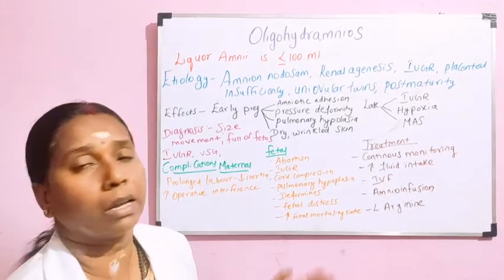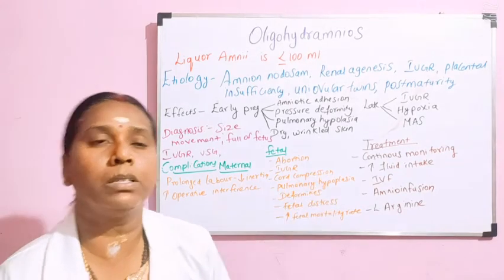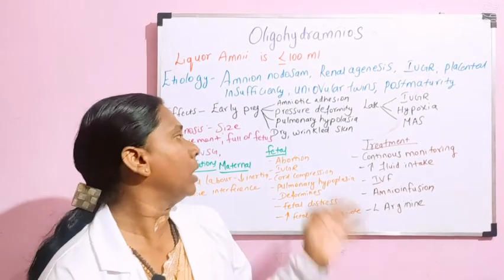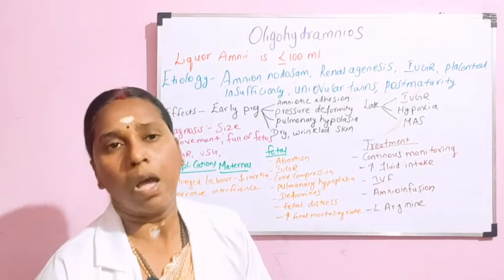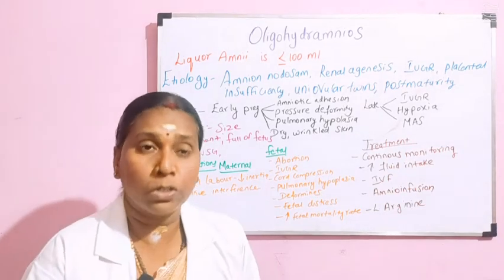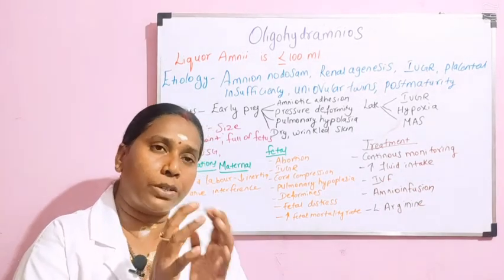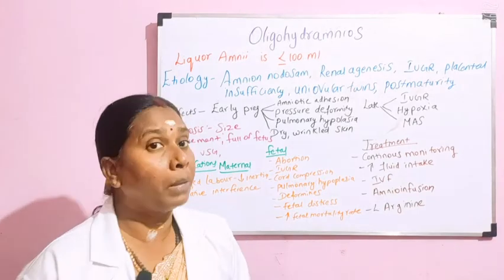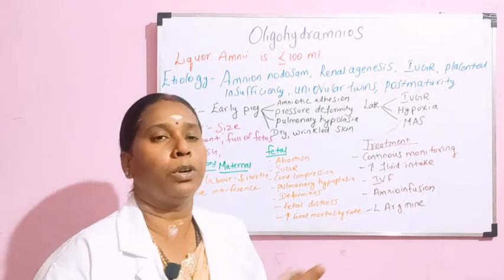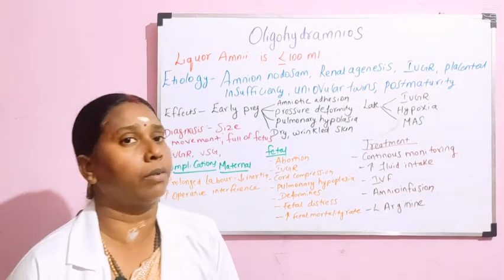On the fetal side, decreased placental perfusion in early pregnancy leads to abortion. In later pregnancy it leads to intrauterine growth retardation. Then cord compression: since the abdomen is full of fetus, the baby lies on the cord and the full pressure of the fetus compresses it, causing decreased placental perfusion, which can lead to abortion, IUGR, or intrauterine death.